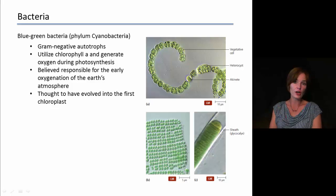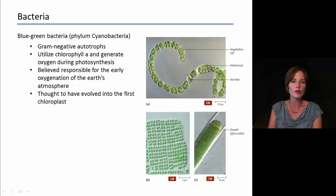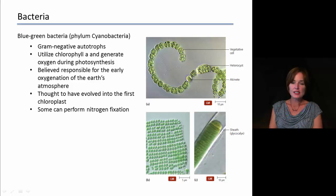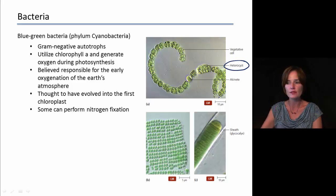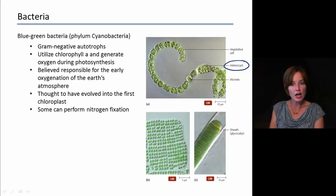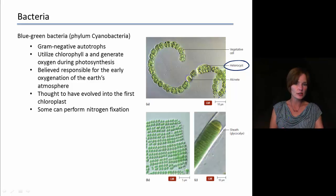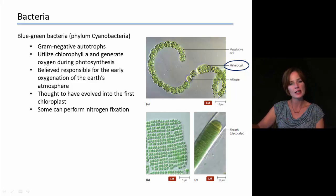Cyanobacteria are thought to have evolved into the first chloroplasts. One cyanobacterium is thought to have been swallowed up via endosymbiosis theory, and over time it evolved into the chloroplast we see in eukaryotic cells today. Some cyanobacteria cells are able to perform nitrogen fixation. The heterocyst is a specialized cell involved in nitrogen fixation that looks different from surrounding cells. Because oxygen produced during photosynthesis interferes with nitrogen fixation, separate cells perform each process — the heterocysts have a thick cell wall and perform nitrogen fixation.